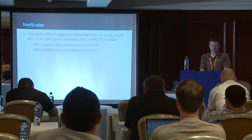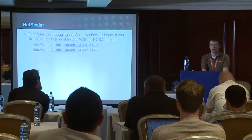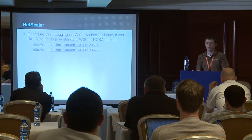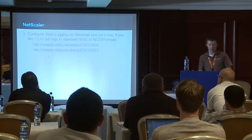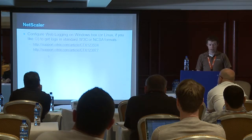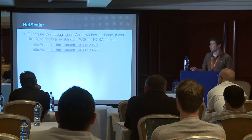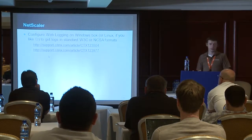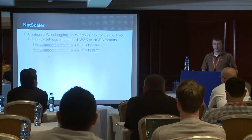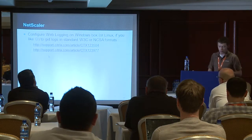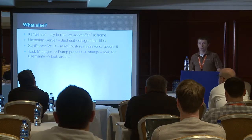If you use Netscaler to load balance XML services or web interface, you will not see real IP addresses — you will only see the Netscaler IP address. To get real IP addresses, you need to access web logs. With Netscaler you can do this easily by installing the web logging service on Windows or Linux. There is a lot of information on the Citrix website about how to configure this, and you'll get standard event logs with all real client IP addresses.